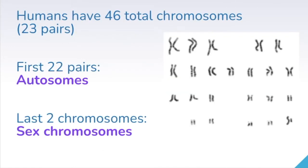So let's look at a karyotype. Remember, a karyotype is just an image of all the chromosomes in the nucleus of any one cell of an organism. In humans we have 46 total chromosomes, or 23 pairs. The first 22 pairs are called autosomes, and the two that are left are our sex chromosomes.